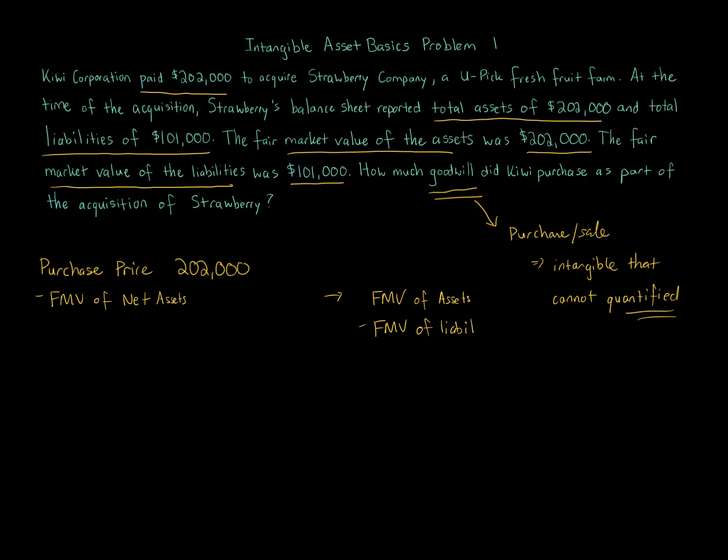Now, the $202,000 purchase price that was told to us, Kiwi Corporation paid $202,000 to acquire Strawberry. So we got that information. We're told that the balance sheet reported total assets of $202,000, total liabilities of $101,000. So those two pieces of information are very important, but they don't actually go on here because we focus on the fair market value. The fair market value of the assets is also $202,000. We can put that down, $202,000 minus the fair market value of the liabilities, that is $101,000. We subtract away the two numbers and we get the fair market value of the net assets, which is $101,000.